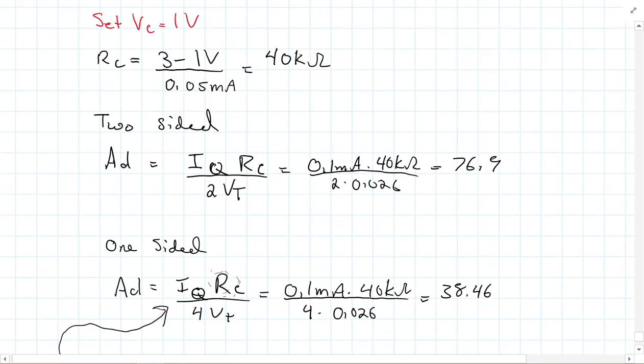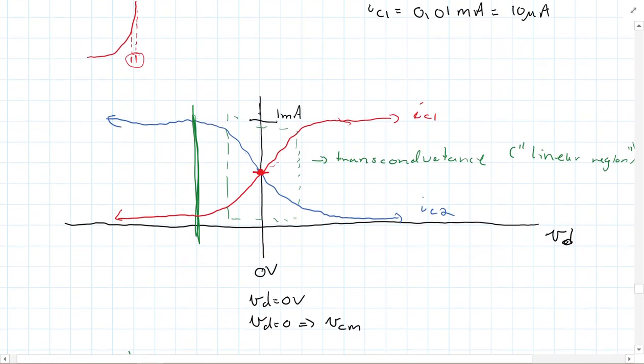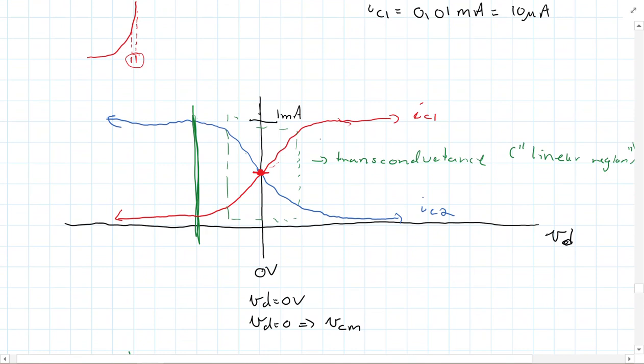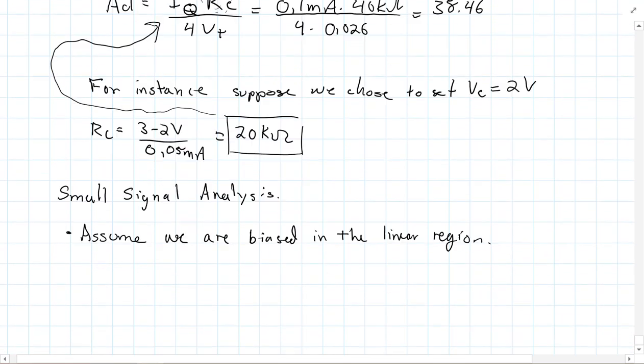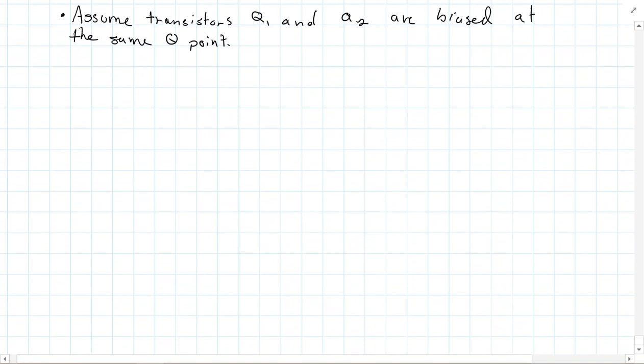There are a couple of assumptions we're going to make here. First, we're going to assume we are biased in the linear region. Remember, I'm going to scroll back here a little bit to find the graph. So this is when we talked about the linear region, and I zoomed in on this particular graph. Remember, these are the currents for the differential amplifier, the two currents IC1 and IC2, and we're assuming we're in this linear region. We're also going to assume transistors Q1 and Q2 are biased at the same Q point. In other words, we're assuming that the DC differential voltage for them is zero.